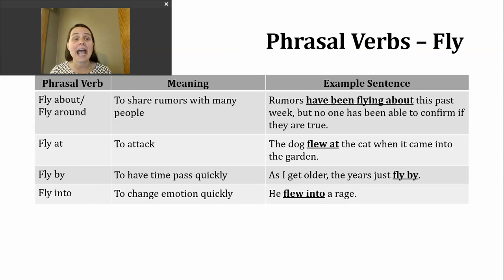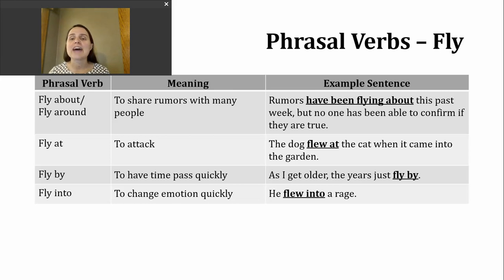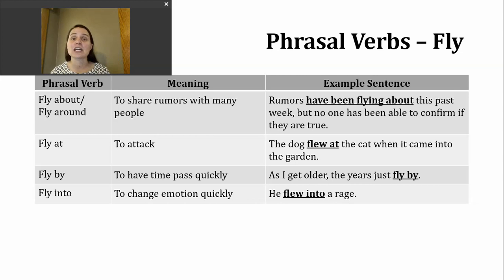Let's take a look at some phrasal verbs. One phrasal verb you might hear is fly about or fly around. These two phrasal verbs can have about the same meaning, which is to share rumors with many people. For example: Rumors have been flying about this past week, but no one has been able to confirm if they are true. The idea of flying about here is being shared with many, many people.